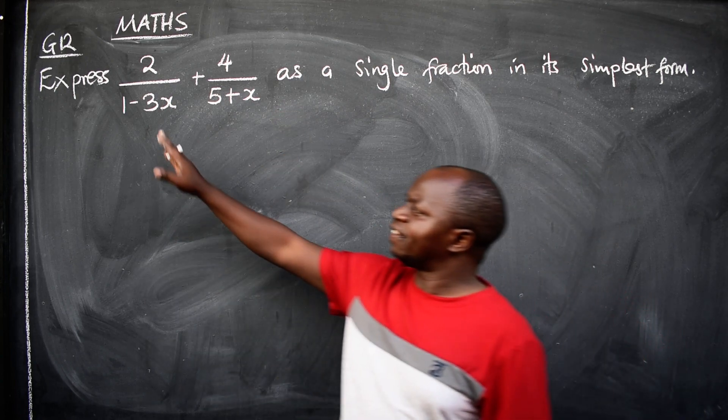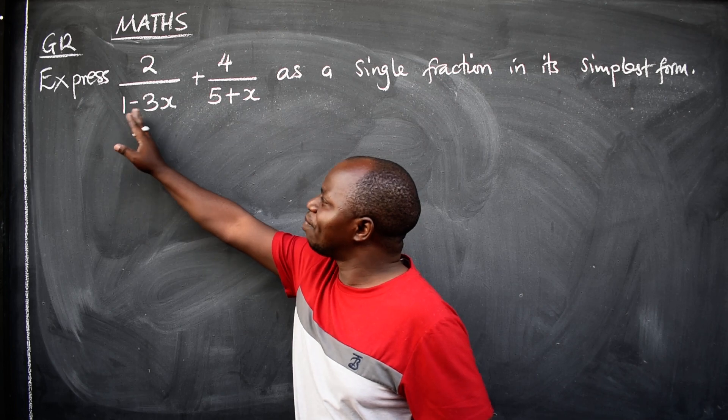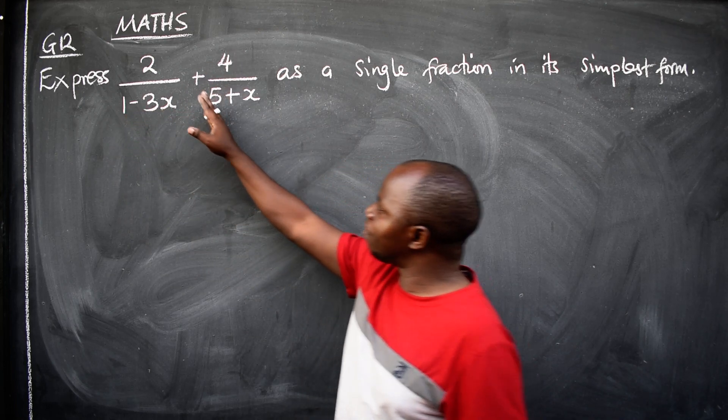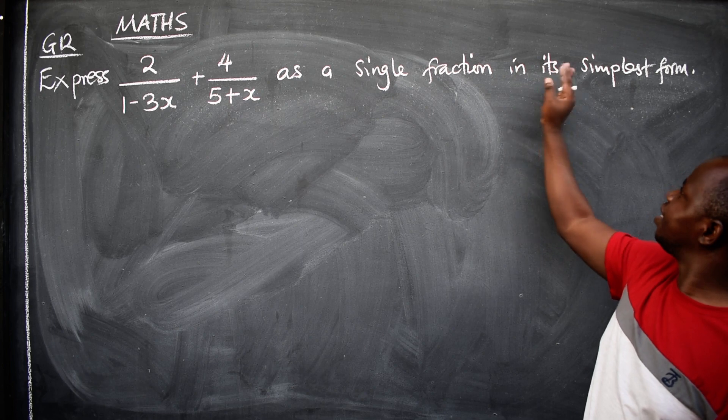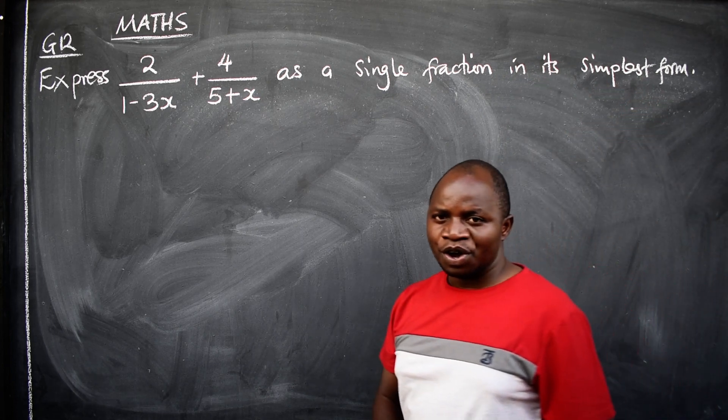The question says express 2 over 1 minus 3x plus 4 over 5 plus x as a single fraction in its lowest form.